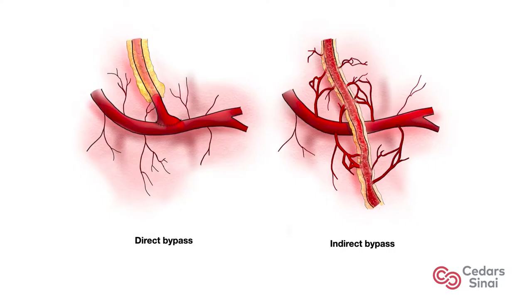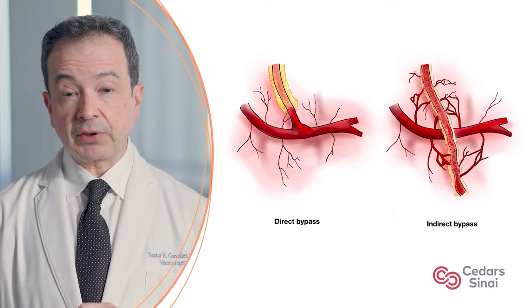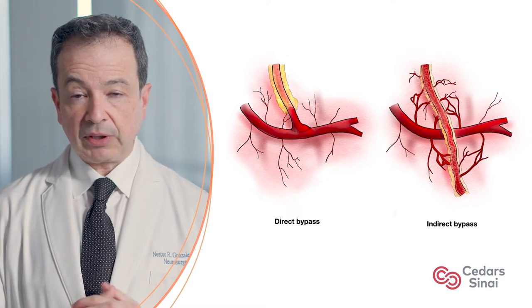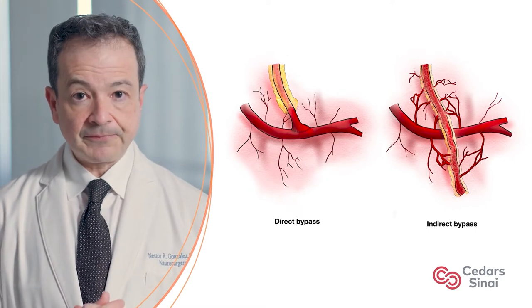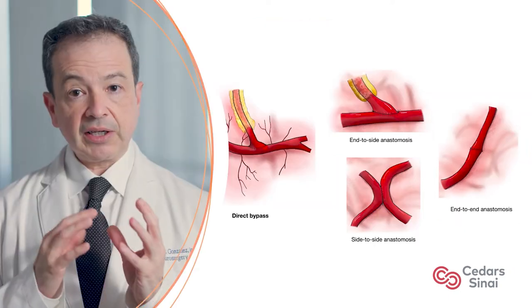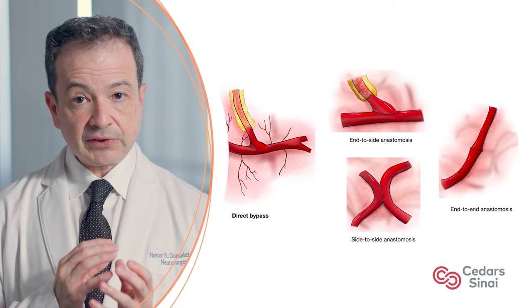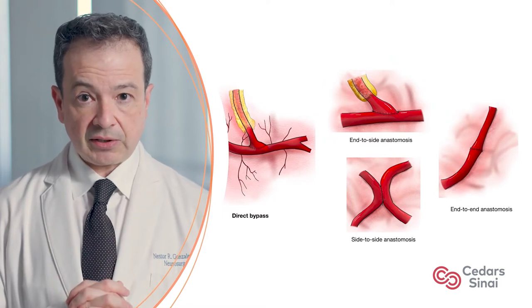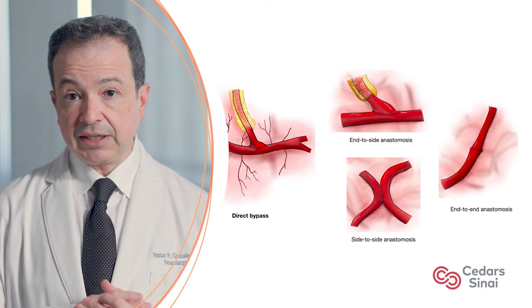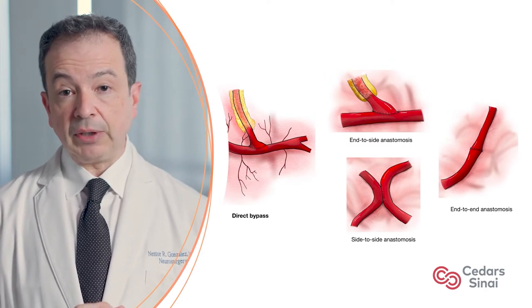There are two general types of cerebral bypasses: direct bypasses and indirect bypasses. A third form of cerebral revascularization results from combining the two techniques in what is called combined bypasses. Direct bypasses are built by creating a direct anastomosis between two vessels, either extracranial to intracranial vessels or between intracranial arteries. This anastomosis can be end-to-side, side-to-side, or end-to-end connections.